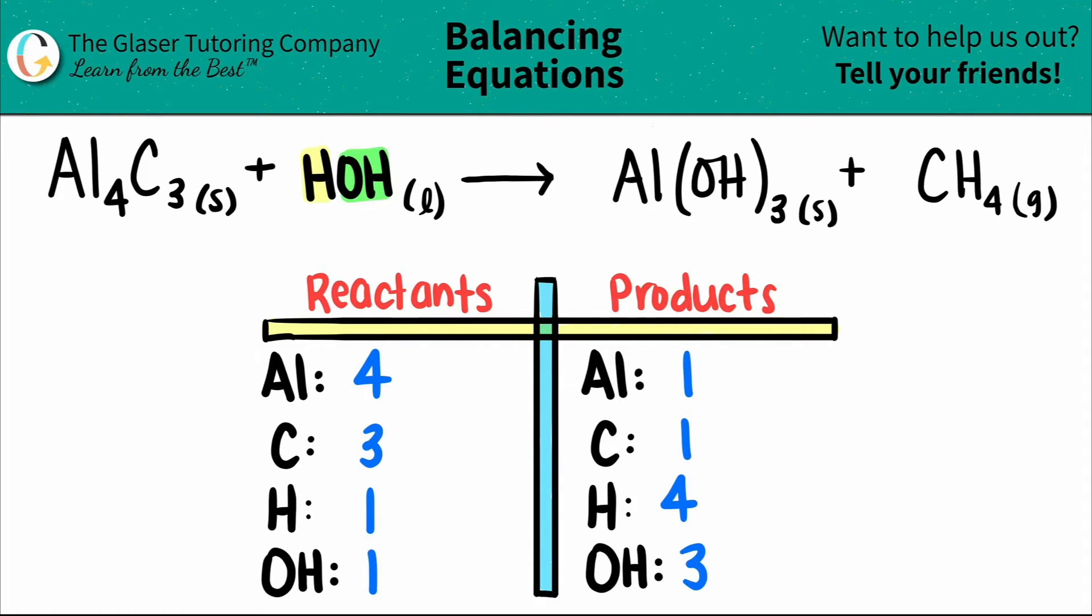Okay, all the numbers are all over the place. Let's see if we can balance them out. Doesn't matter which one you choose, just choose the one that looks the easiest for you. What I'm going to do is maybe I will balance the aluminums. I know that I have to take the smaller number and turn it into the larger number. One times what will get me to four? Well, one times four, and whatever number that you state is going to be the number that you put in the front.